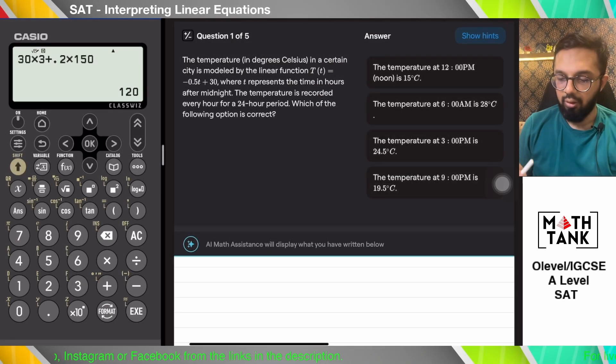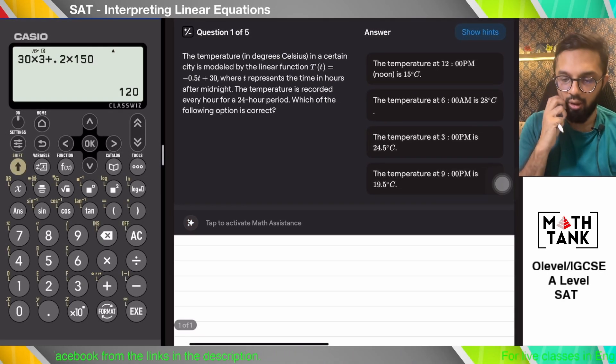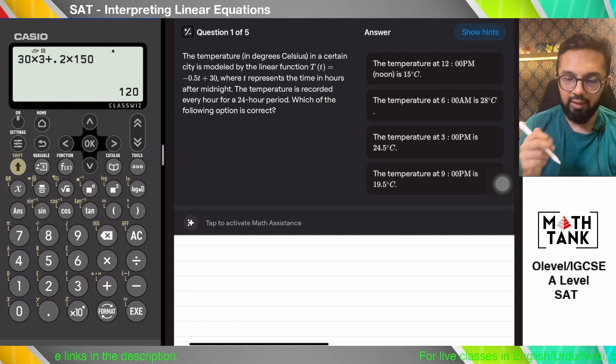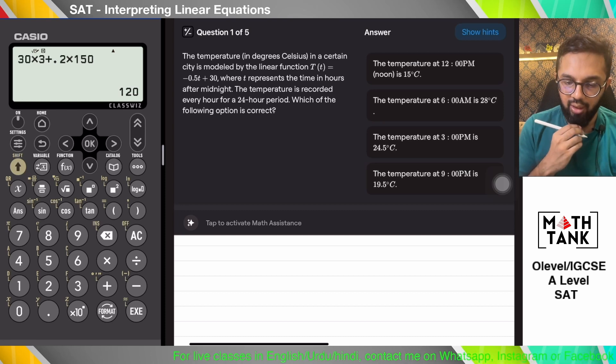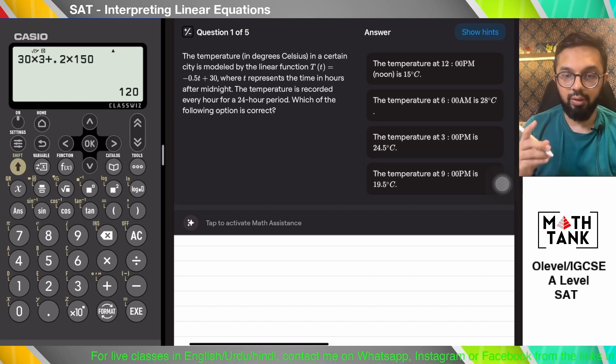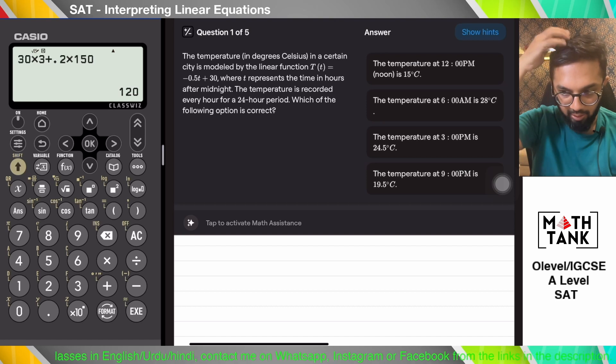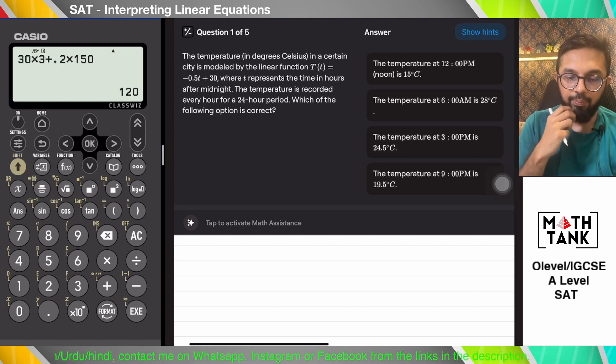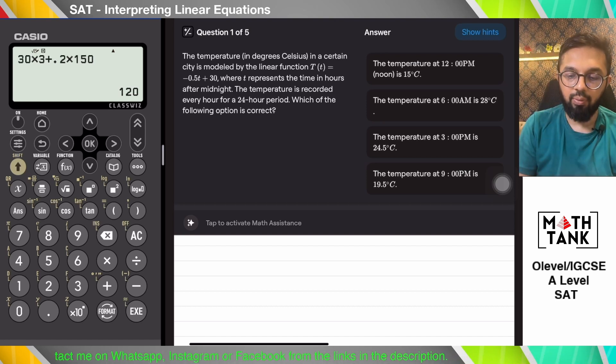Hello and welcome to another session on interpreting linear equations. These are now hard questions. The temperature in degrees Celsius of a certain city is modeled by the linear function T, where T represents the time in hours after midnight. The temperature is recorded every hour for a 24-hour period.